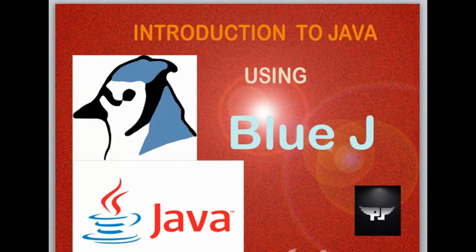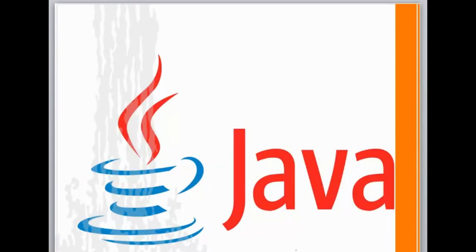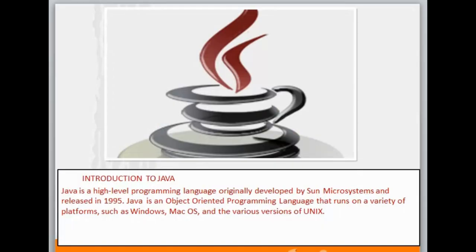This is the first tutorial on Java programming. In this module we will learn how to do Java programs using BlueJ. First let me have a brief introduction of Java. Java is a high level language which was developed by James Gosling and team. It was developed by Sun Microsystems and it was released in 1995.